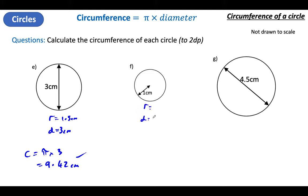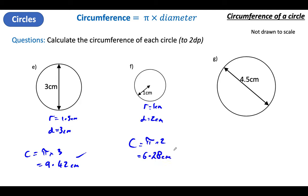R equals, D equals. This is a radius — it only goes half the way across — which means my diameter must be double that. Circumference — the distance around the outside — is Pi times by diameter, so it's Pi times by 2, which is 6.28 to two decimal places.